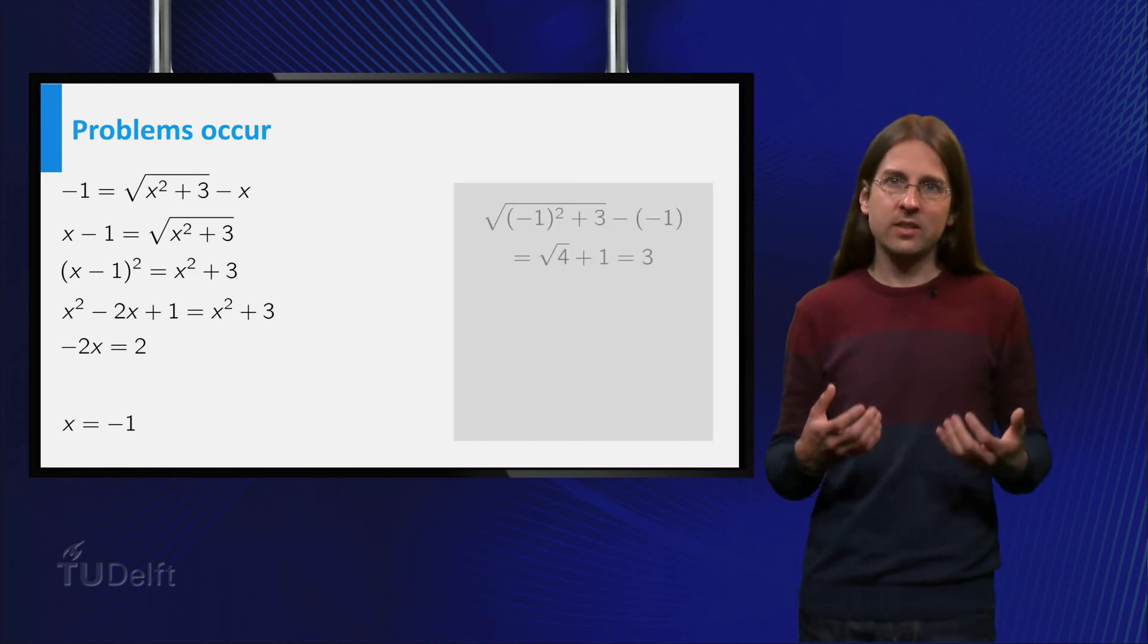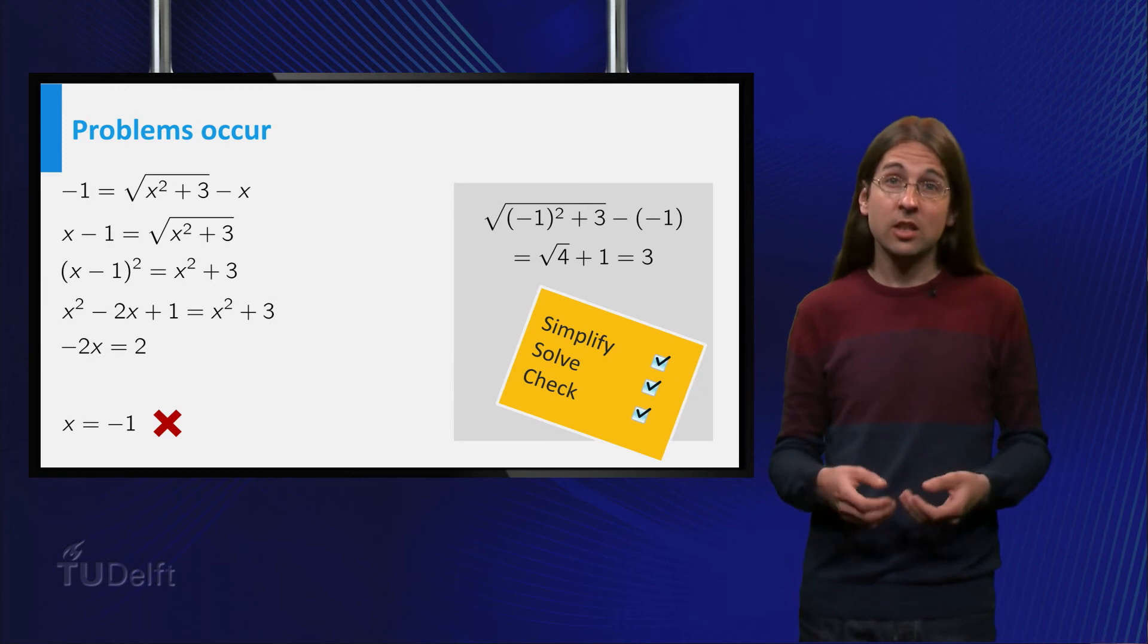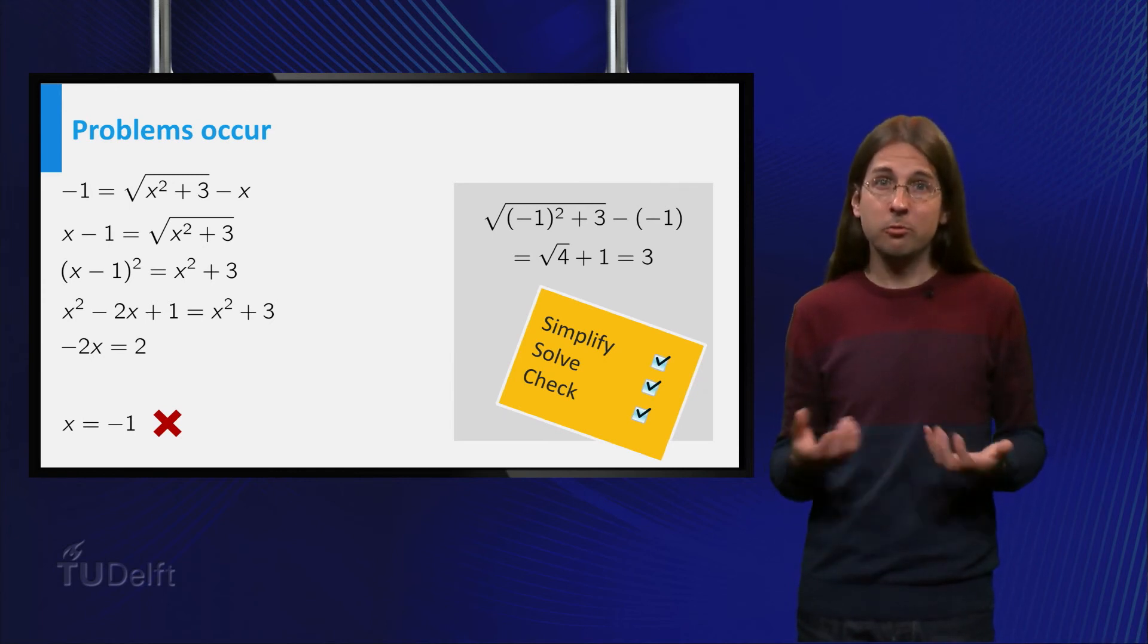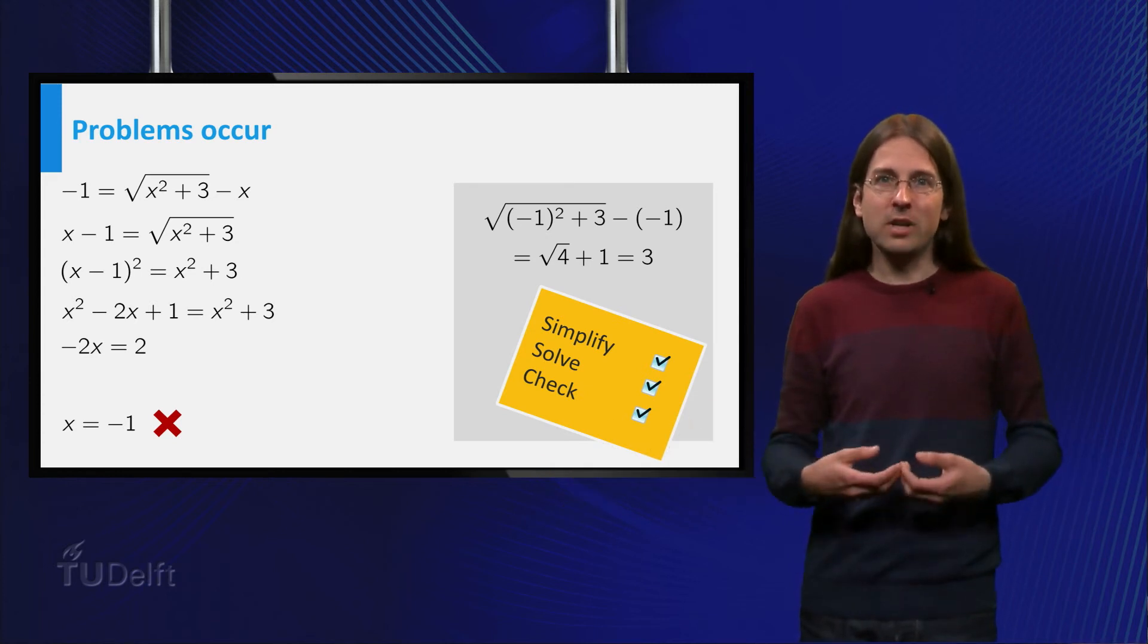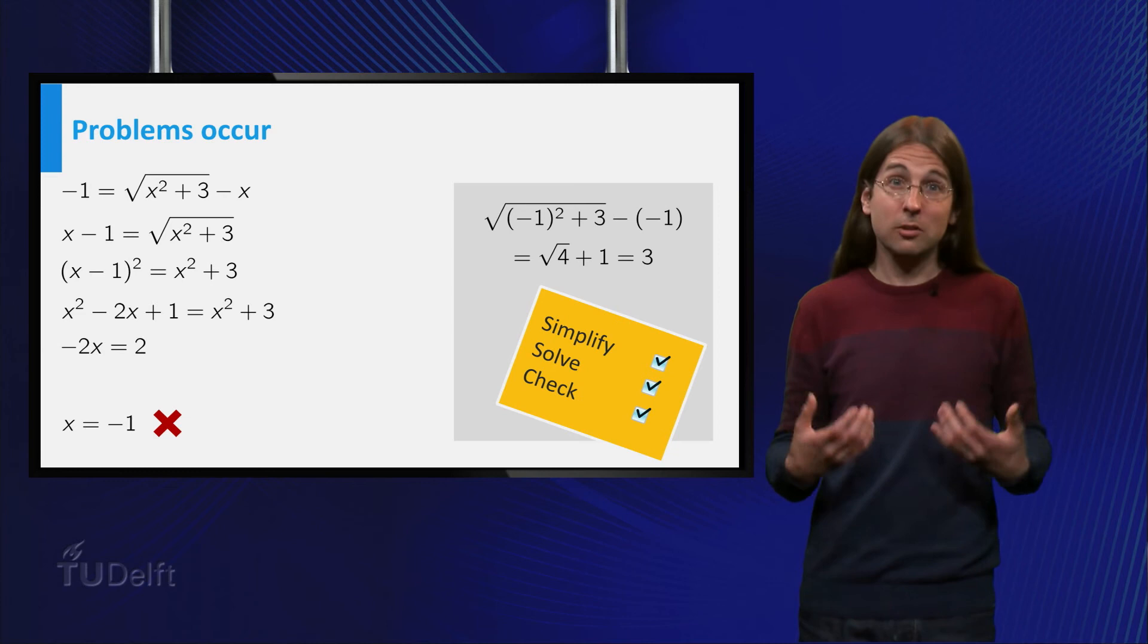But plugging in x equals minus 1 in the equation, we obtain minus 1 equals 3, which is not correct. Apparently this equation has no solutions. How can it be that we found a false solution?